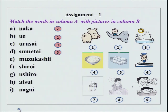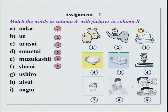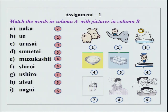Sumetai as in cold to the touch — Sumetai desu. Muzukashi — mundai wa muzukashi desu kara. Tanaka san wa ima kangaete imasu. Then we have shiroi — Gohan wa shiroi desu. Then ushiro — Butasan ushiro desu, meaning behind or backside. Atsui — ima atsui desu. And nagai — Shinkansen wa nagai desu. This was exercise 1.